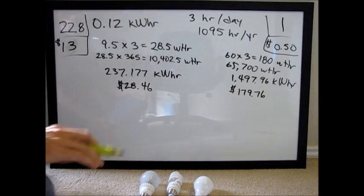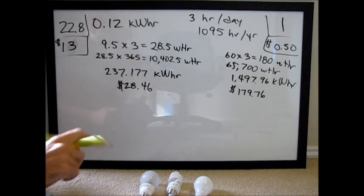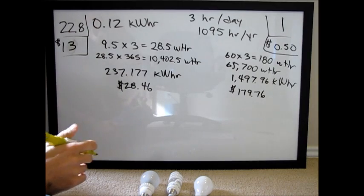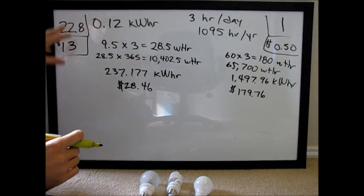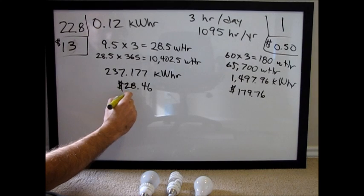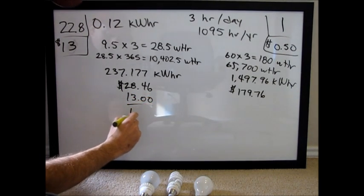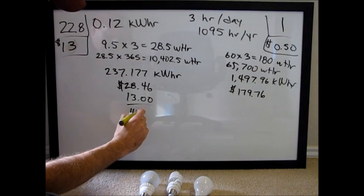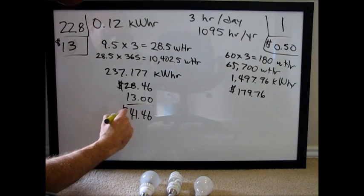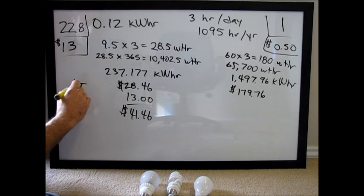Now you can do the math as well to verify, but okay, so now we need to add the cost of the bulb. In 22.8 years, you're only going to pay for one bulb. Thirteen bucks. So we have a grand total of $41.46 over here for LED.